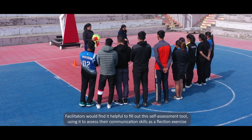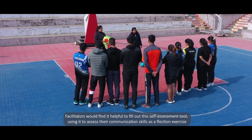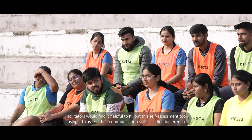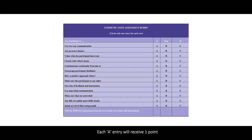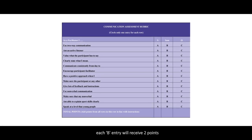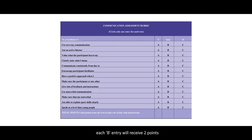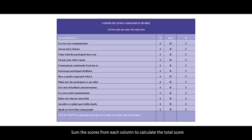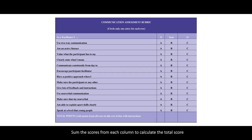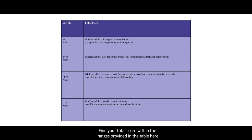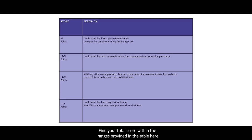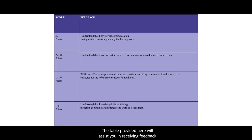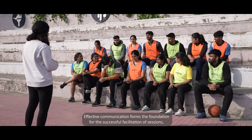Facilitators would find it helpful to fill out this self-assessment tool, using it to assess their communication skills as a reflection exercise. Each A entry will receive one point, each B entry will receive two points, and each C entry will receive three points. Sum the scores from each column to calculate the total score, then find your total score within the ranges provided in the table. The table provided here will assist you in receiving feedback.